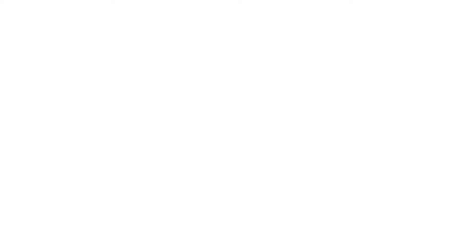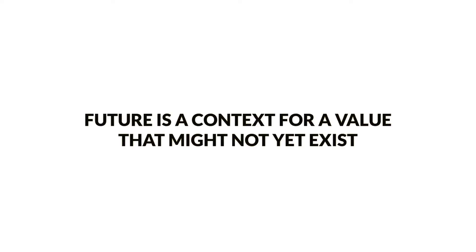In this video I'd like to explain future and promise in Swift. First let's talk briefly about what the future is. Future is a context for a value that might not yet exist. Generally we use future to represent the eventual completion or failure of an asynchronous operation. Swift comes with a native implementation of futures as part of the Combine framework, so future can be treated as a publisher in Swift.